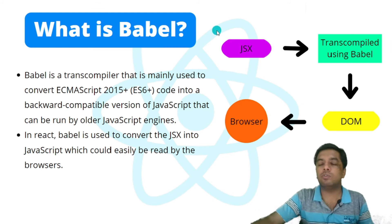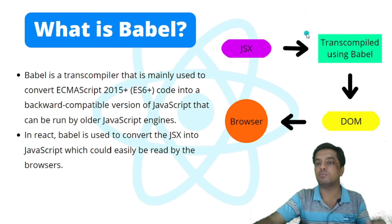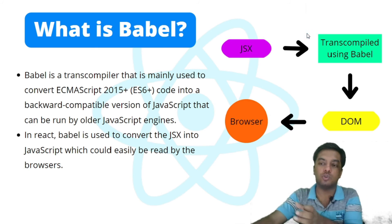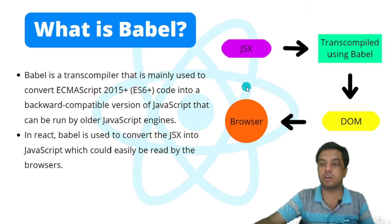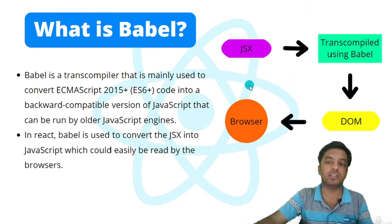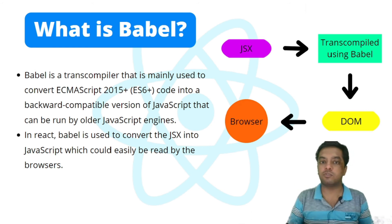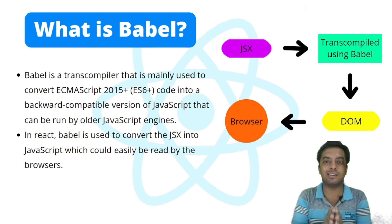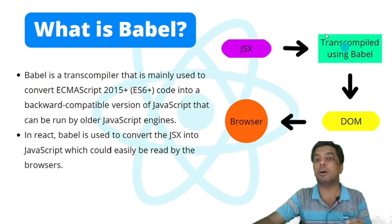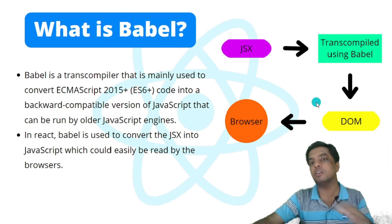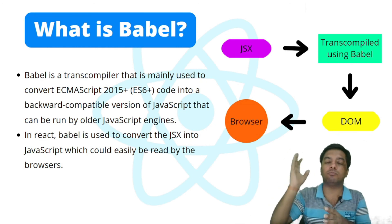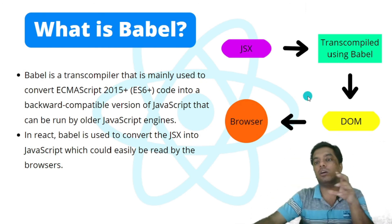So the full pipeline is: we start with JSX, which is transpiled using Babel into a JavaScript object. That JavaScript object updates the virtual DOM, the virtual DOM further updates the actual DOM, and that DOM renders all the changes to the browser. From JSX we get JS code, that JS code updates the DOM, and the DOM updates what's visible in the browser. For a deeper understanding of the virtual DOM and how this all works, check out the previous video.